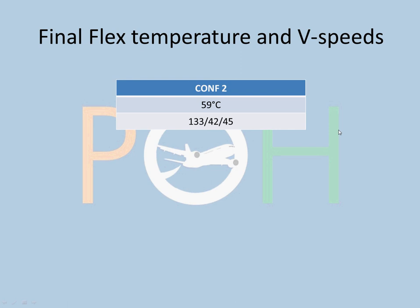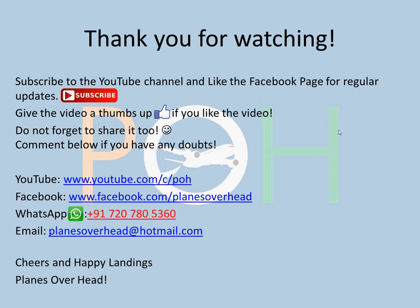Our final result: Config 2 takeoff with flex temperature 59°, V1 = 133, VR = 142, V2 = 145. Note that wet correction can be applied directly from the chart for a quicker, slightly less accurate result. However, if the chart states all thrust reverses inoperative, you must use the FCOM method as demonstrated. I hope you've understood — thanks for watching, subscribe, like, and share, and comment below with any doubts. Happy landings!